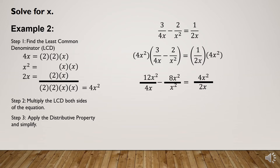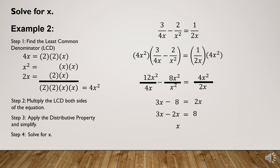Now simplify each term: 12x² ÷ 4x = 3x. Then -8x² / x² = -8. On the right side, 4x² / 2x = 2x. We now solve: combine like terms by transposing 2x to the left and -8 to the right, giving 3x - 2x = 8.